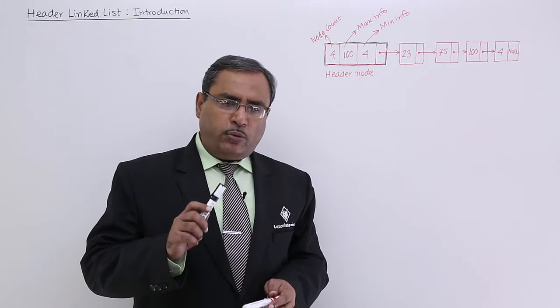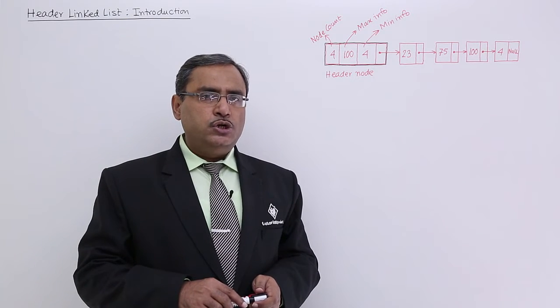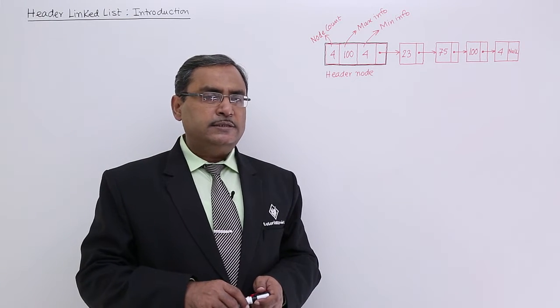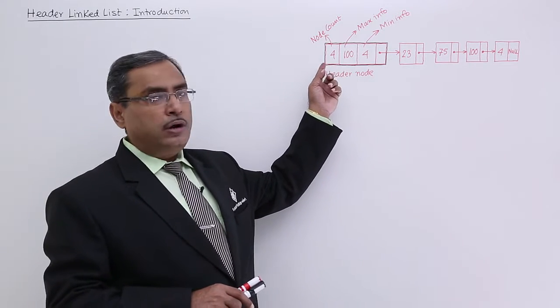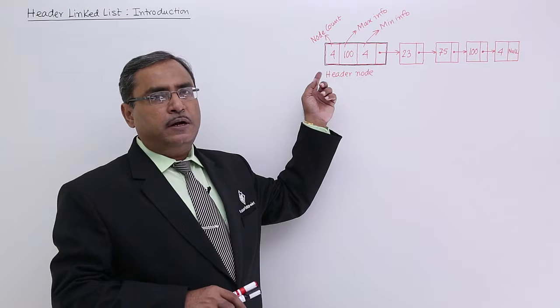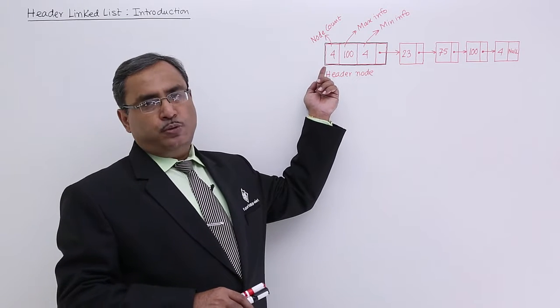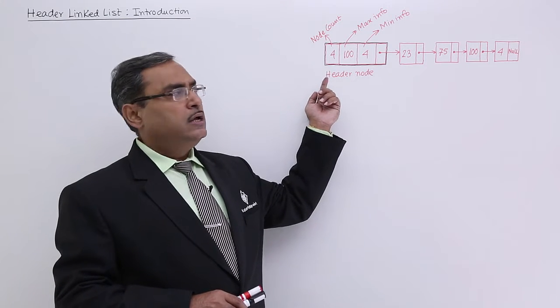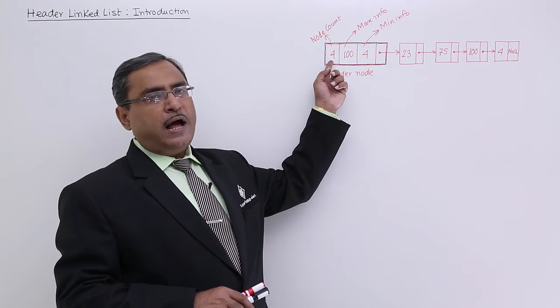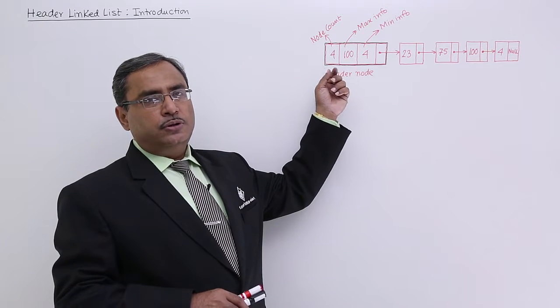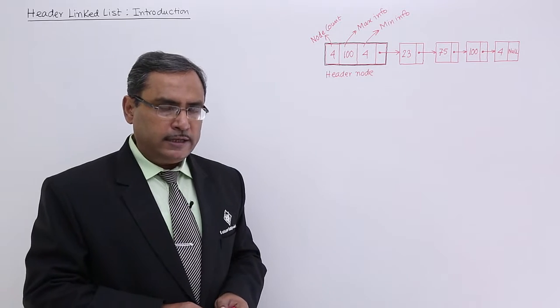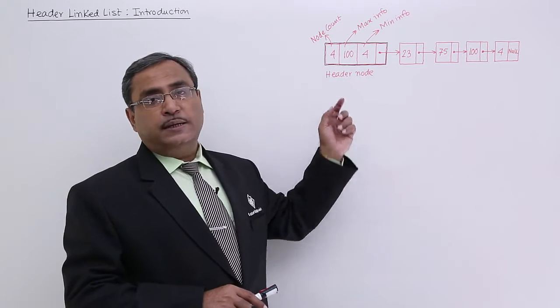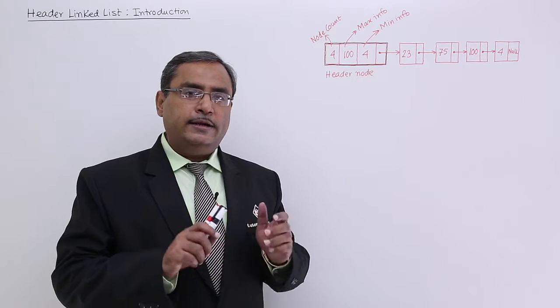Now if the query comes asking how many nodes are in the linked list, I don't need to traverse the full list. Since the count is in the header node, the pointer pointing to it (let's call it start) can directly give me the node count. This is the concept of a header node and header linked list.